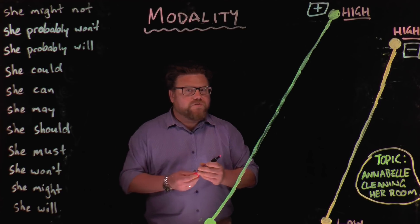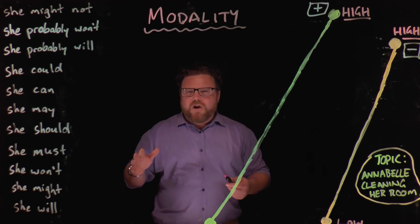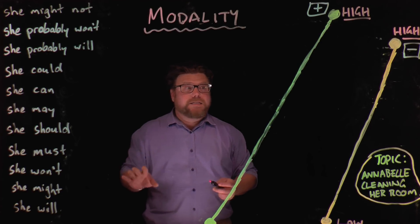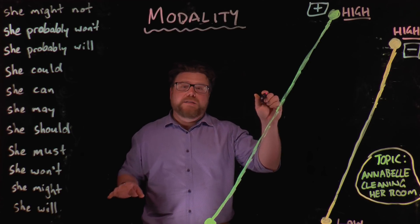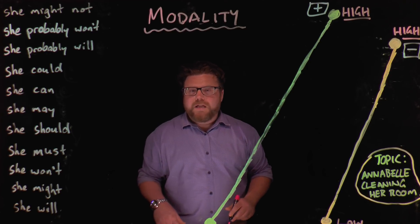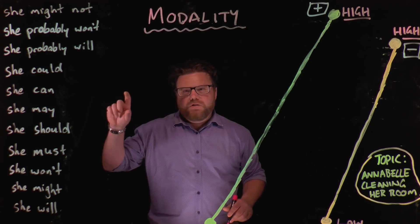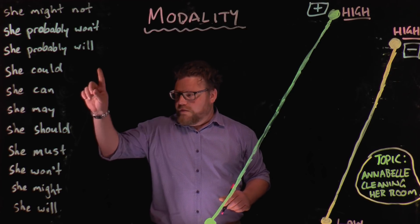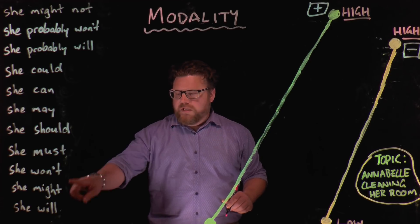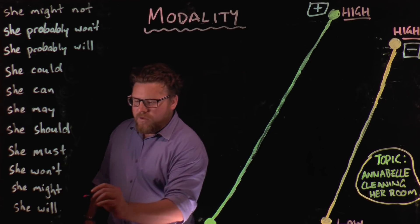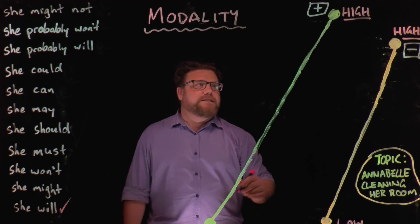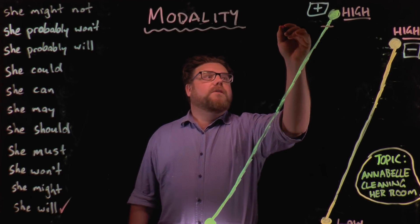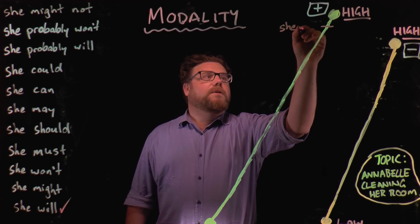Now, some of them get a bit tricky, and there are no right or wrong answers — you can argue about some in the middle. But let's start by finding the highest modal verbs. We want the highest certainty on the topic of Annabelle cleaning her room. The highest certainty would have to be 'she will.' She will clean her room. So let's put 'she will' right at the top — it's positive, so it goes at the top of the positive scale.